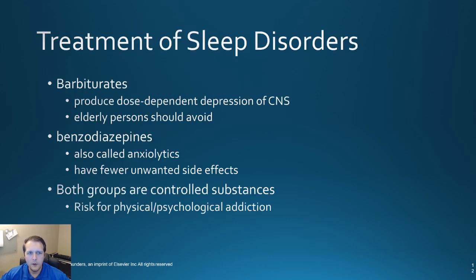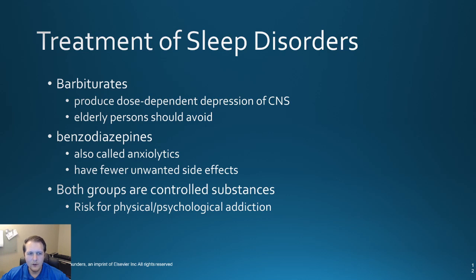There are a couple categories here, including the barbiturates, which include things like phenobarbital and secobarbital — usually if it contains -barbital at the end, that means it's a barbiturate — and then there are the benzodiazepines. This includes things like alprazolam, which is Xanax, and midazolam, which is Versed — usually -lam is going to be on the end of the name. We use benzodiazepines much more frequently nowadays because it helps to mitigate some of the side effects. Both of these are considered controlled substances, which means they can have a risk for causing physical dependence or in some cases psychological addiction as well.